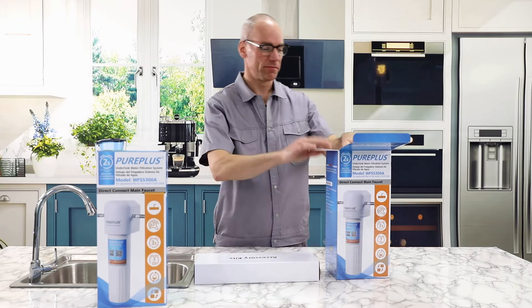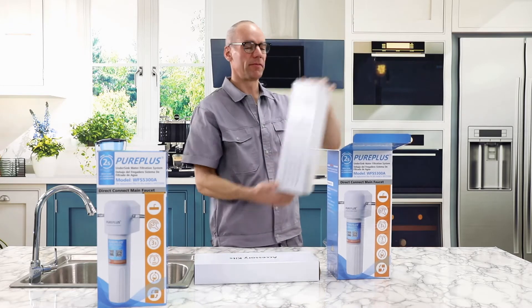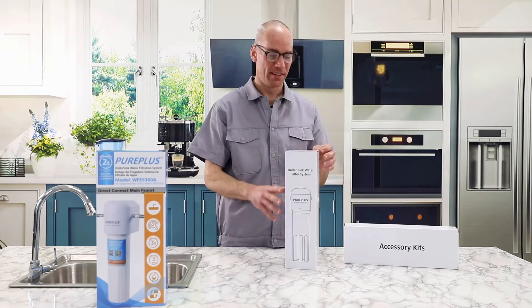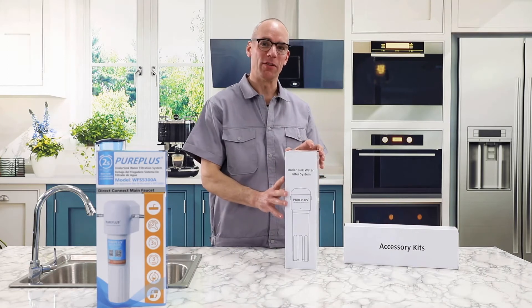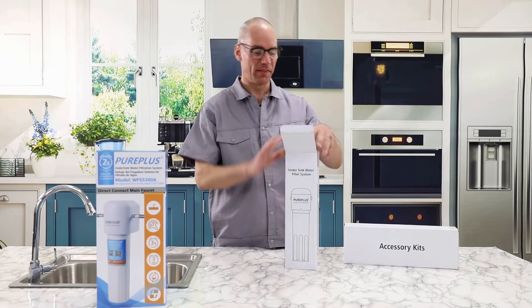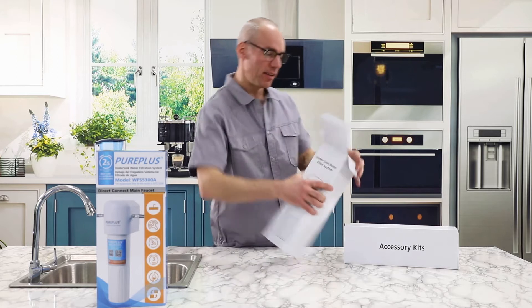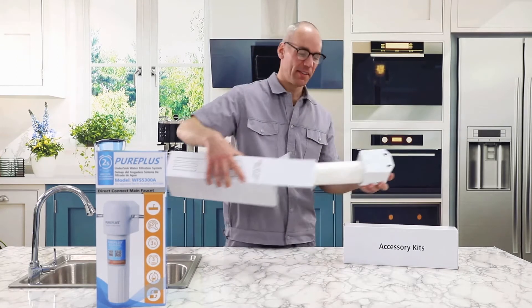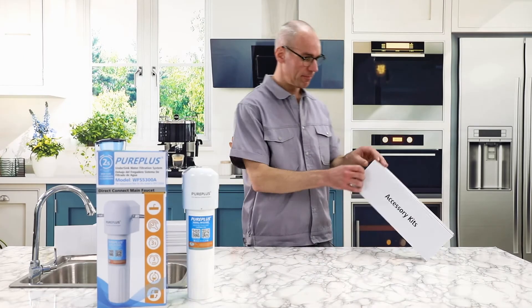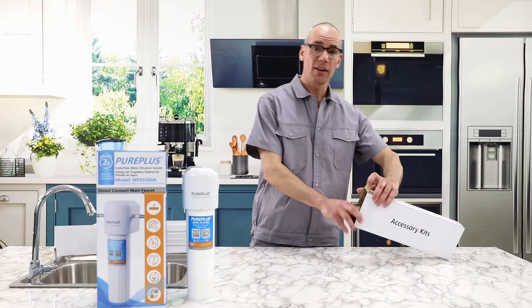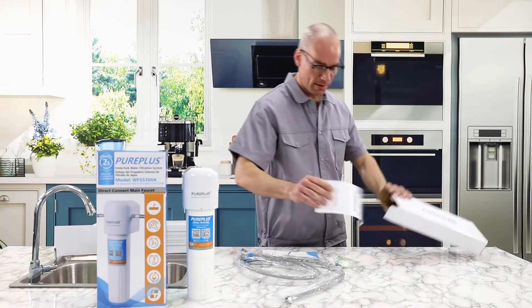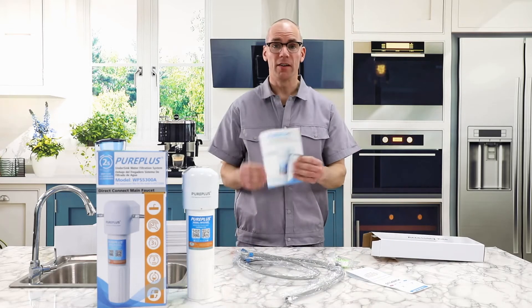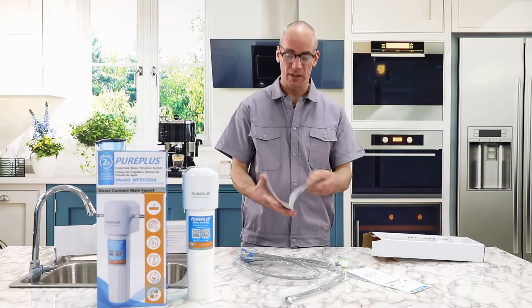Accessories Kit. Undersink Water Filter System. Open the Undersink Water Filter System box. Take out the system. Open the Accessories Kit. Take out all the accessories and check whether any accessories are missing according to the instructions.